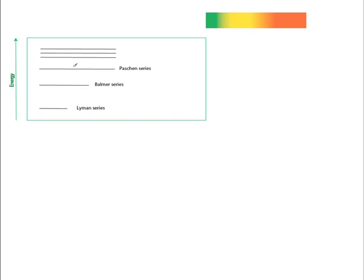We're going to talk about atomic spectra now, using the hydrogen atom as a starting point. We chose the hydrogen atom simply because it is the simplest atom out there — it's only got one electron, so there's nothing to confuse the spectral emission lines. This is going to represent a spectrum, and this is an energy level diagram which I've already labeled up: the Lyman series, Balmer series, and Paschen series, which you should have from your textbooks.